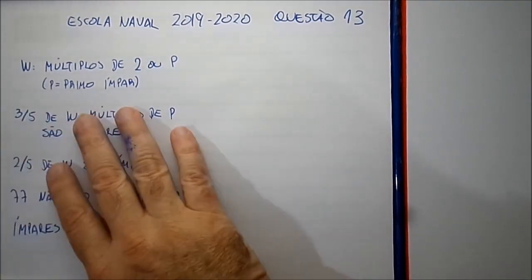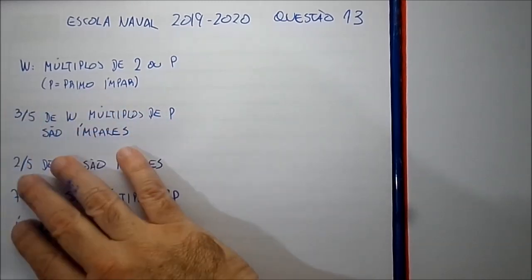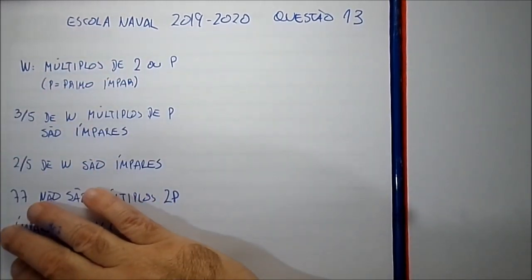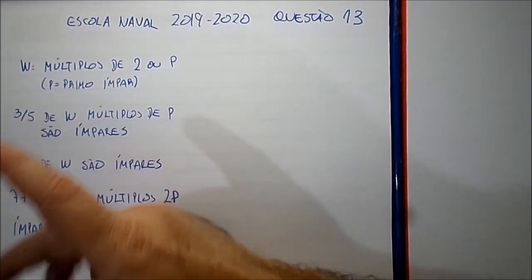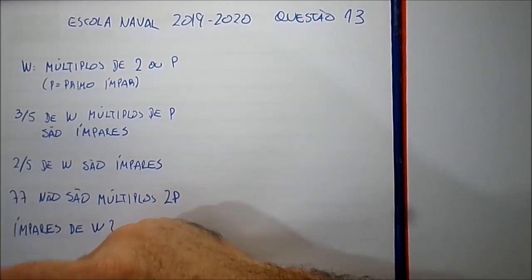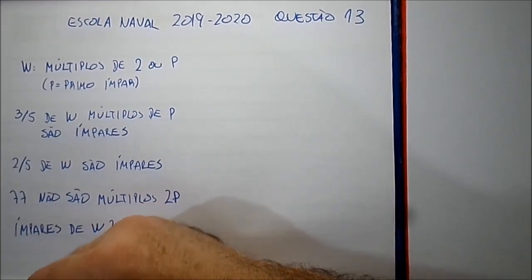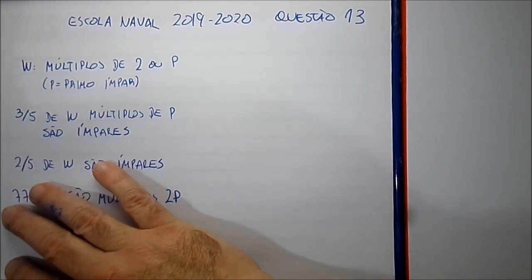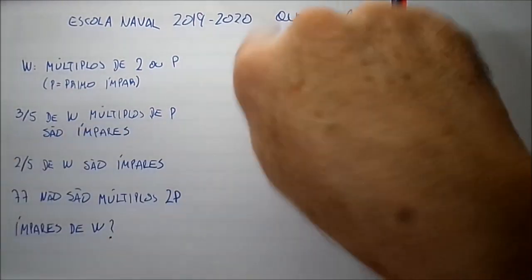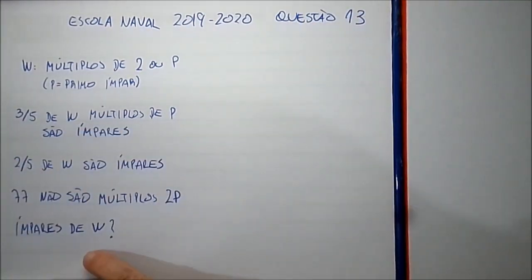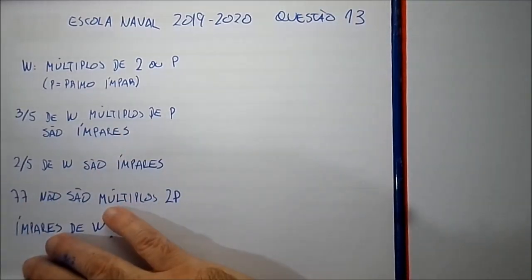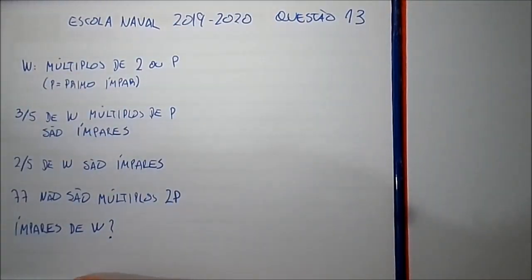Então, na verdade, esse enunciado — eu não sei se estava em inglês, se foi traduzido — deveria estar escrito: seja W o conjunto de múltiplos de 2 ou P. Quer dizer, uma certa quantidade de números, e não necessariamente uma sequência completa de múltiplos. Podem estar salteados.